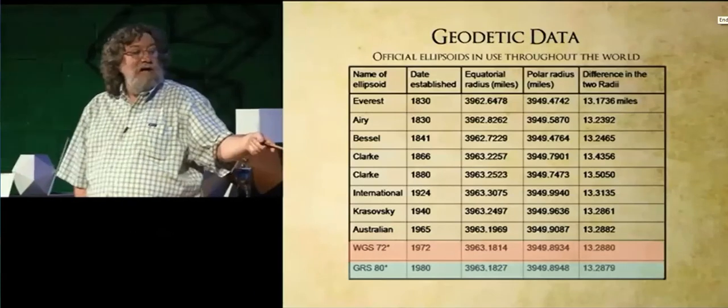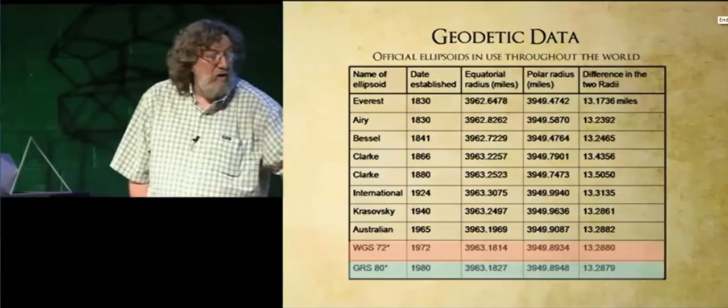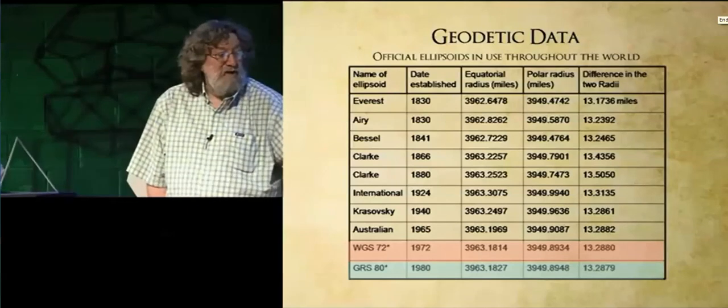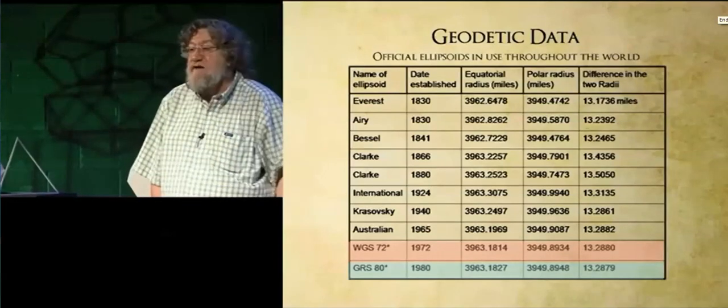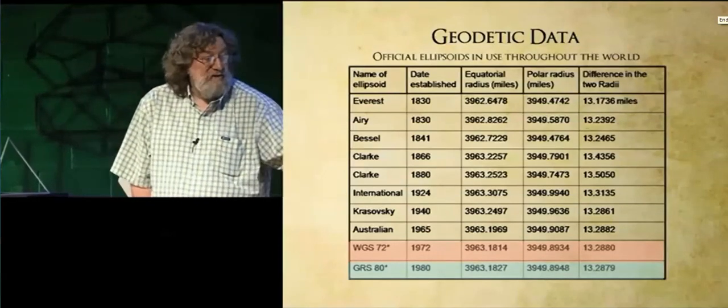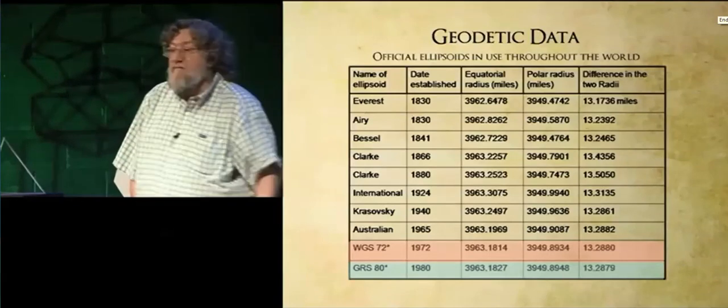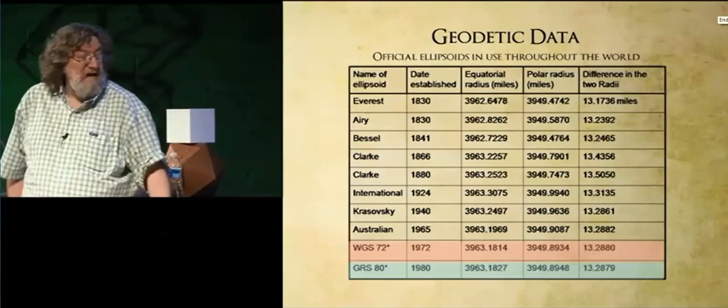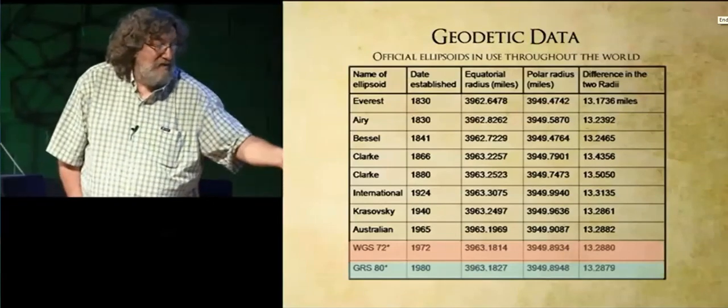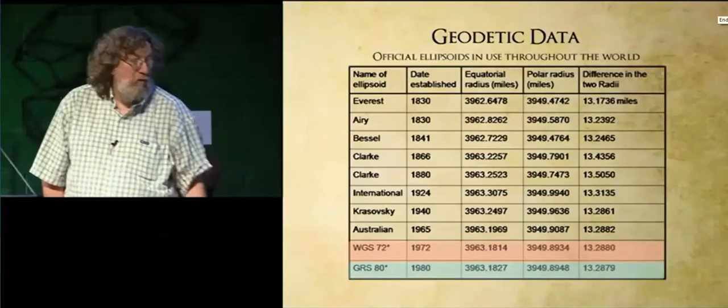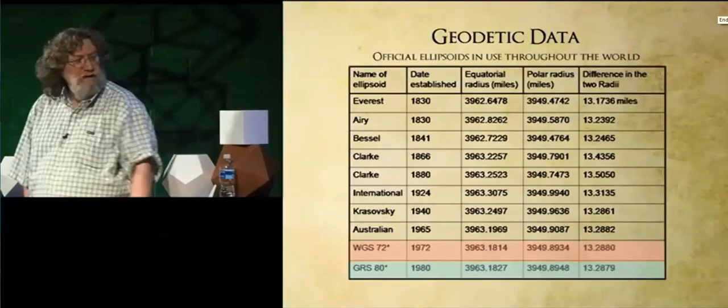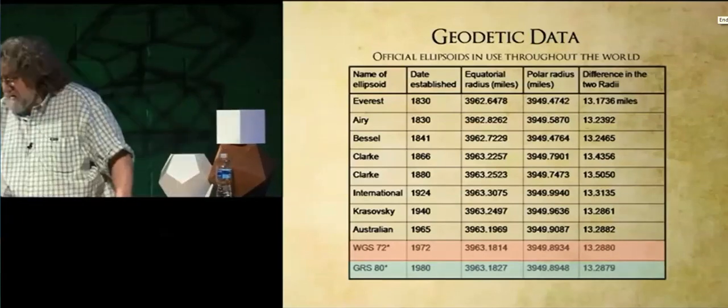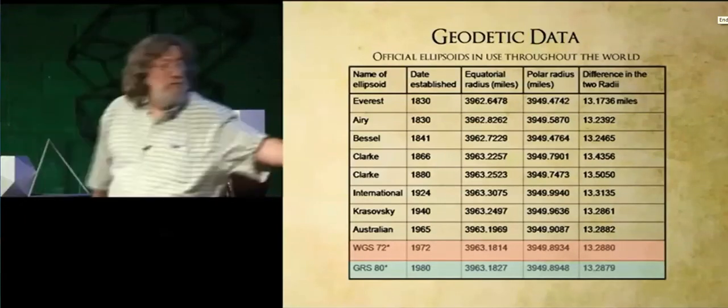Finally, with satellite measurements, we've determined that the polar radius, for example, 3,949.8934, 3,949.8948. What does that translate into? In terms of feet, that's a difference of about 250 feet between these two measurements.